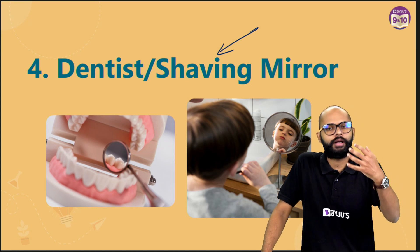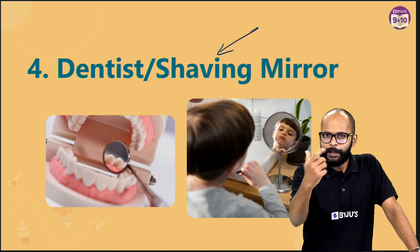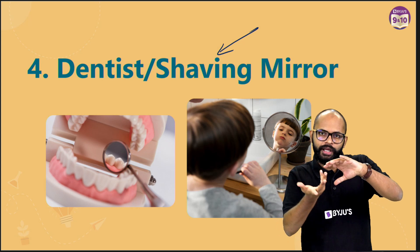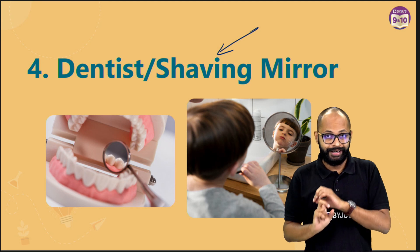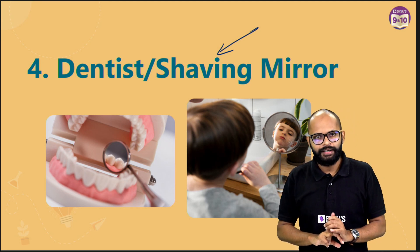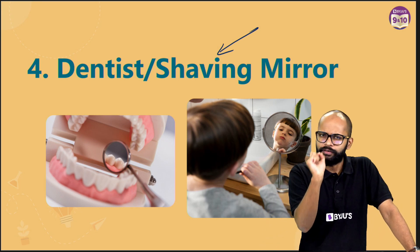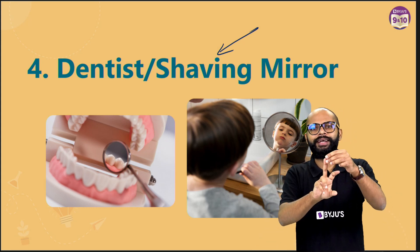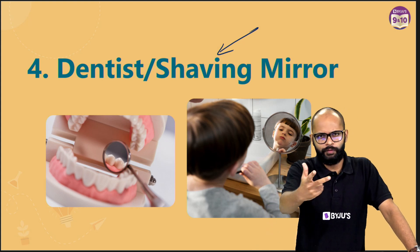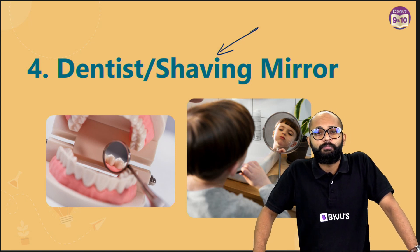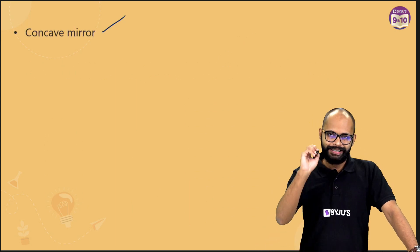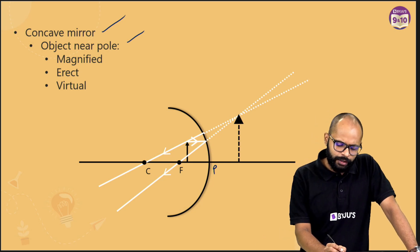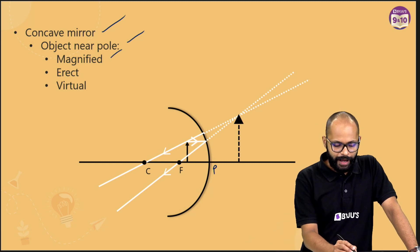Next: dentist or shaving mirrors. What is the requirement? They want the image to be virtual — inside the mirror — and erect, because you don't want to appear upside down while shaving. Third, the image should be magnified — a dentist doing intricate work wants to see a magnified version of the cavity. So the requirement is a virtual, erect, and magnified image. This is achieved with a concave mirror when the object is placed between the pole and the focus, giving a virtual, erect, and magnified image.